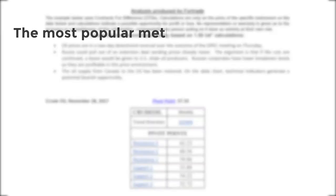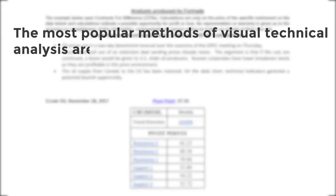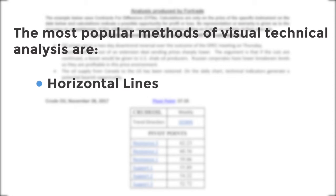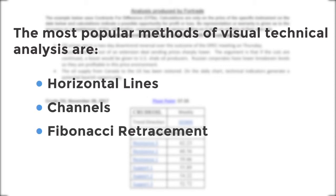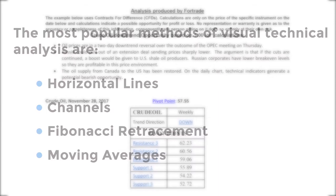The most popular methods of visual technical analysis are horizontal lines, channels, Fibonacci retracement and moving averages, among others. These are used as part of technical analysis in order to determine support and resistance levels.